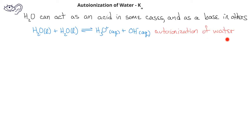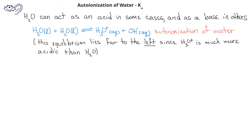The two products that we would get are the hydronium ion and the hydroxide ion. When two water molecules are in equilibrium with one hydronium and one hydroxide, that equilibrium would lie far to the left because hydronium is a much stronger acid than water.